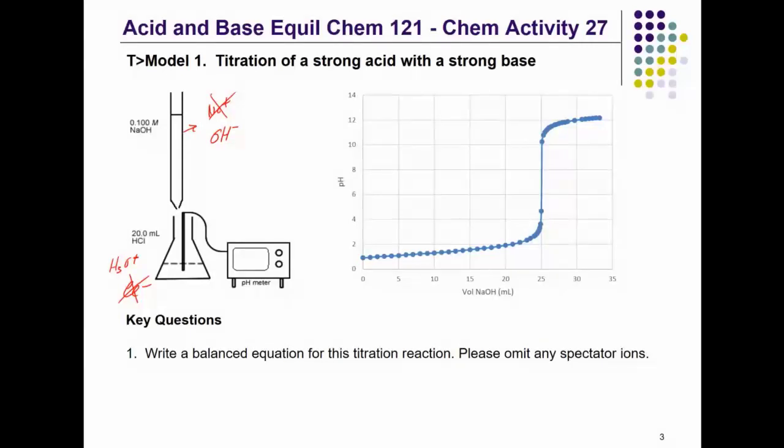So, the balanced equation for this is hydronium ion plus hydroxide ion will produce 2H2O. Would this equation apply to all strong acids, strong base titrations? For sure. Because all strong acids will have negligible conjugate bases. All strong bases will have negligible conjugate acids. So, that's the only thing ever going on in this kind of titration.